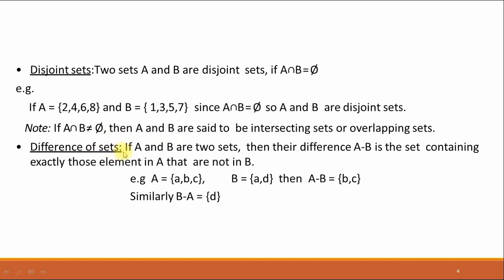Now, the difference of two sets. If A and B are two sets, then A minus B is the set containing exactly those elements in A that are not in B. For example, if A is the set containing the elements a, b, and c, and B is another set containing the elements a and d, then A minus B will be equal to {b, c}. Similarly, B minus A contains only one element, d.